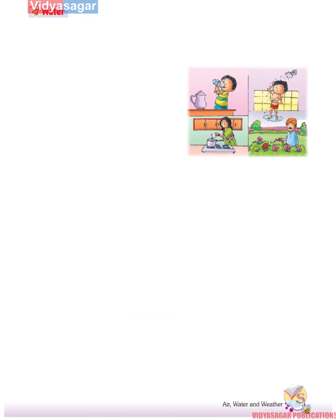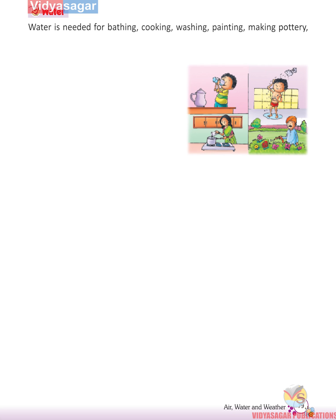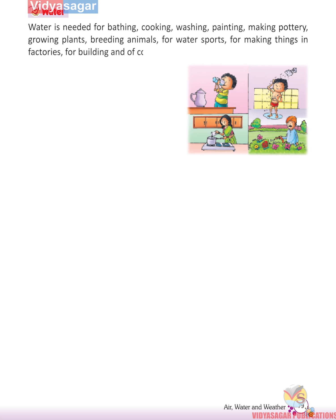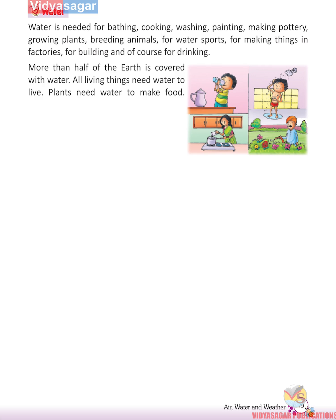Water is needed for bathing, cooking, washing, painting, making pottery, growing plants, breeding animals, water sports, making things in factories, building, and of course for drinking. More than half of the earth is covered with water. All living things need water to live. Plants need water to make food. Animals need water for drinking and bathing.